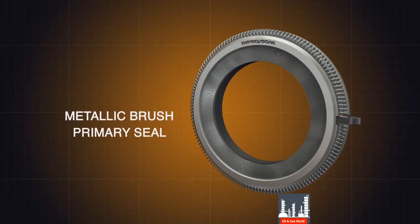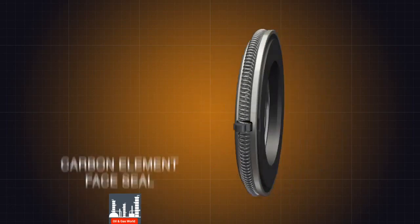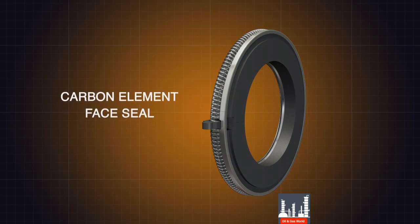Densely packed metallic bristles form a brush that serves as the primary seal, while a carbon element provides face sealing in the steam turbine's casing.